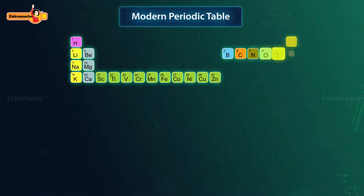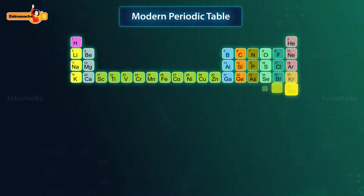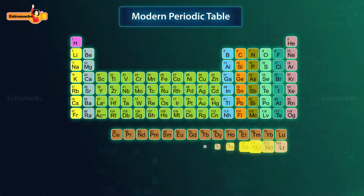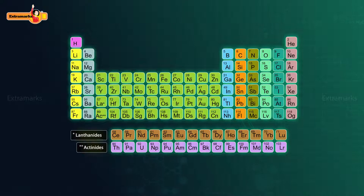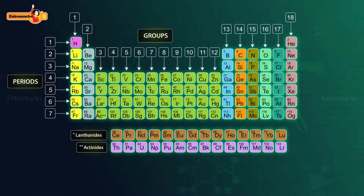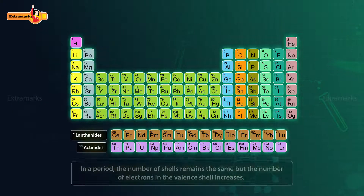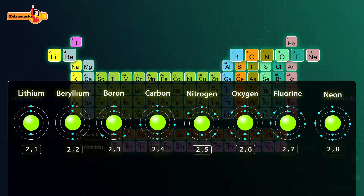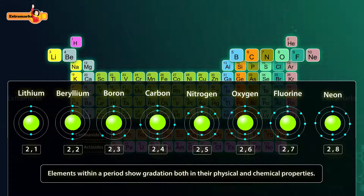The periodic table is the most powerful tool a chemist has for organizing chemical information. The properties of elements show a regular gradation across a period or down a group in a periodic table. When we move across a period, the number of shells remains the same but the number of electrons in the valence shell increases. This is the reason why elements within a period show gradation in both their physical and chemical properties.